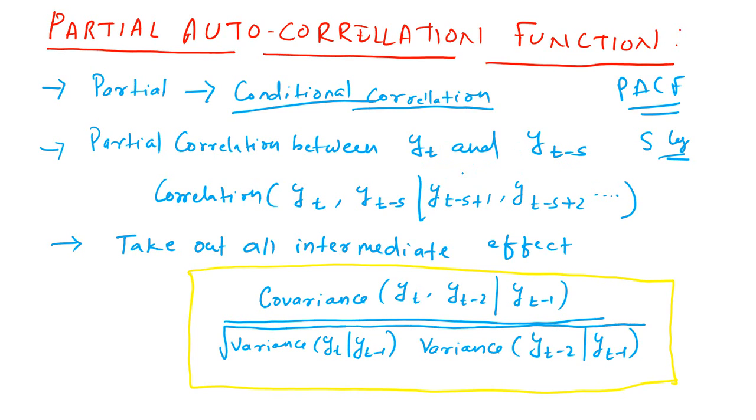Whereas, partial correlation is different in one aspect that we take the control of all the intermediate values. So, what are the intermediate values in this case? What are the intermediate values or intermediate series between yt and yt minus s? It is yt minus 1, yt minus 2 up to yt minus s plus 1. So, we have taken these intermediate values, we have taken out these intermediate values and then found out the correlation and that is known as the partial autocorrelation.